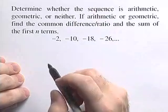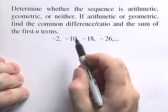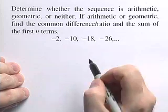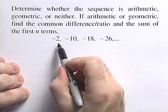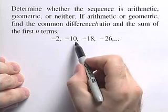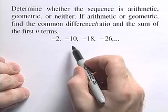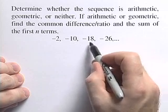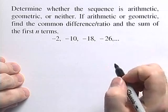We'll go ahead and start by checking to see if it's an arithmetic sequence, and we're going to do that by looking at the difference between consecutive terms. See that the difference between the first two terms is negative 8. The difference between the second two terms is also negative 8. And the difference between the next two terms is, again, negative 8.